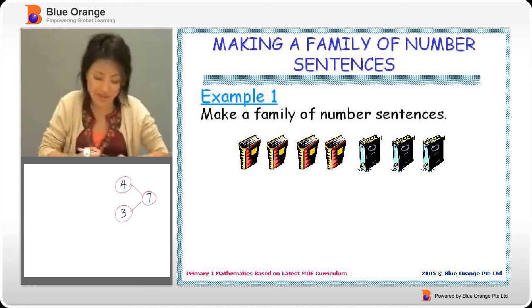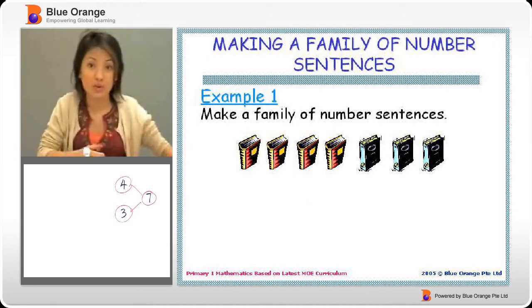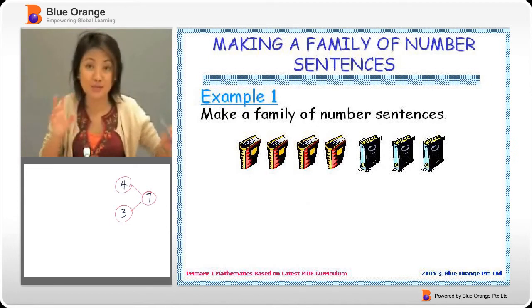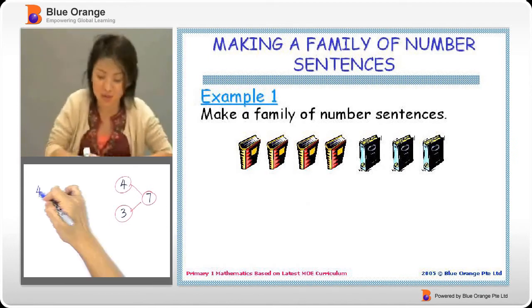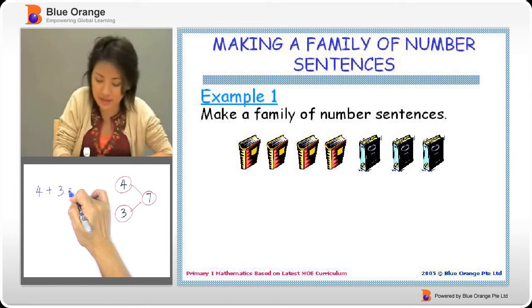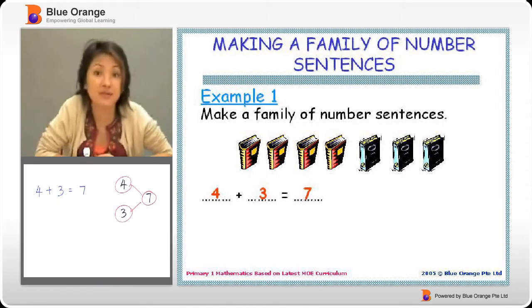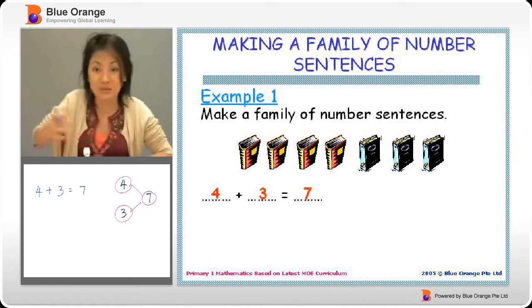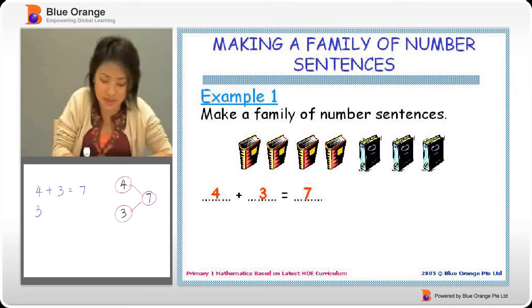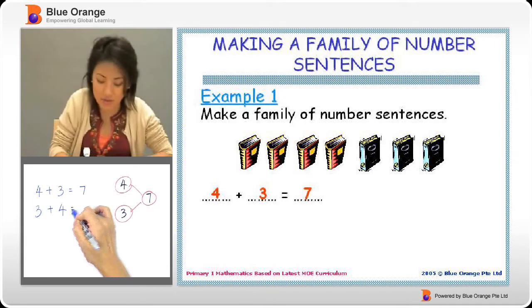If we want to make addition sentences, what do we do? We take the two small parts, put together to make a big part. So four plus three equals seven. Next, we can swap it around. Either yellow plus blue or blue plus yellow is the same thing. So here, three plus four equals seven.